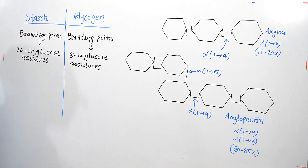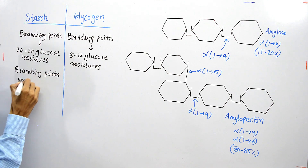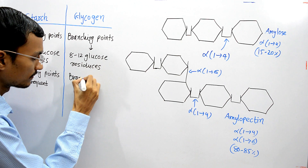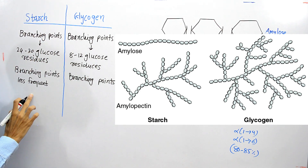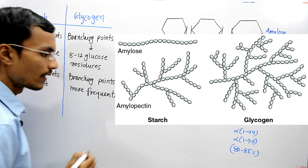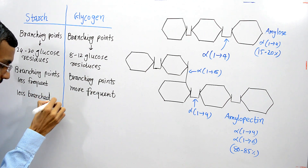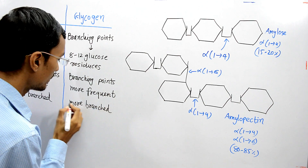We can say that starch is a less branched structure — branching points are less frequent. In glycogen, branching points are more frequent compared to amylopectin of starch. So amylopectin of starch is less branched, while glycogen is more branched.